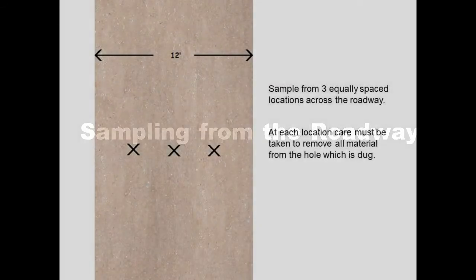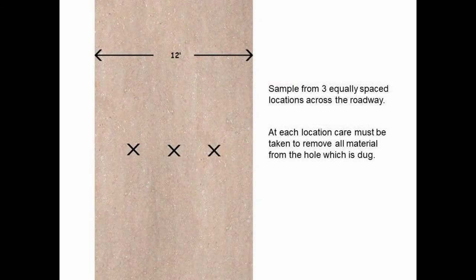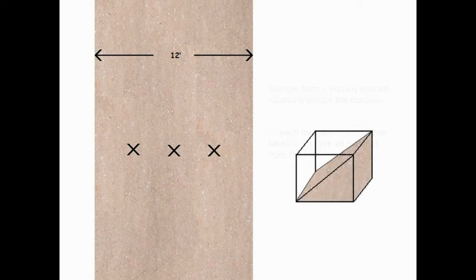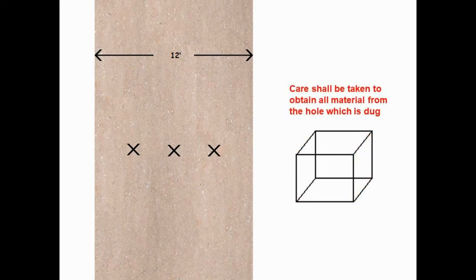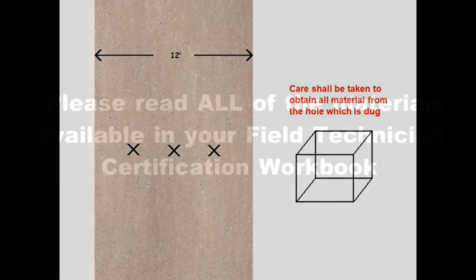Sampling from the roadway. In the case of sampling material in place from the roadway, at least three samples shall be taken with a shovel at equally distributed locations across the width of the roadway. It may be necessary to use a hammer and chisel or similar tools to cut a hole in a compacted roadway. Care shall be taken to obtain all material from the hole which is dug. The samples shall be combined.